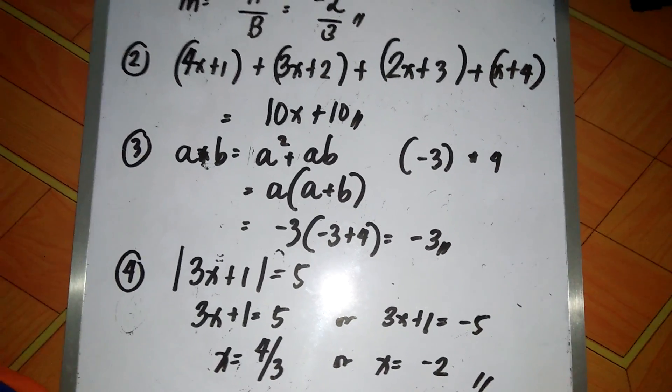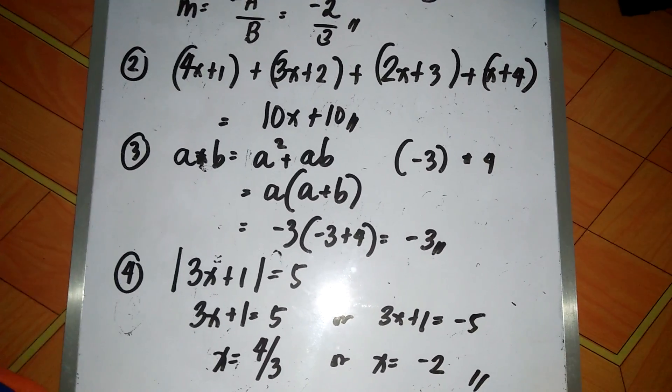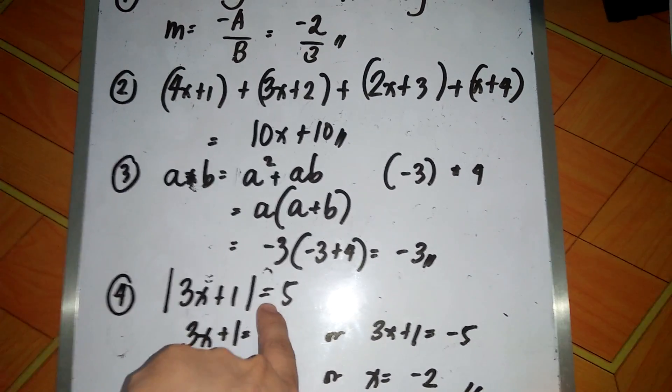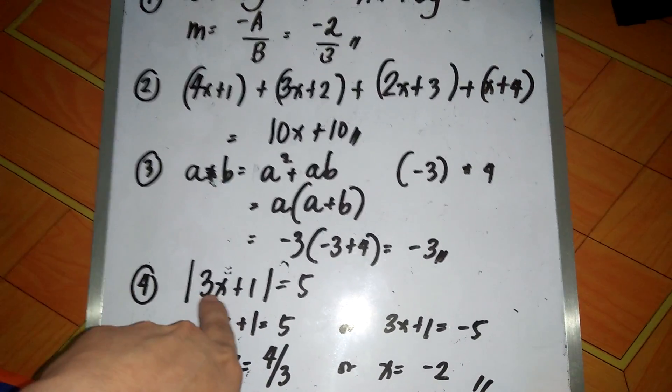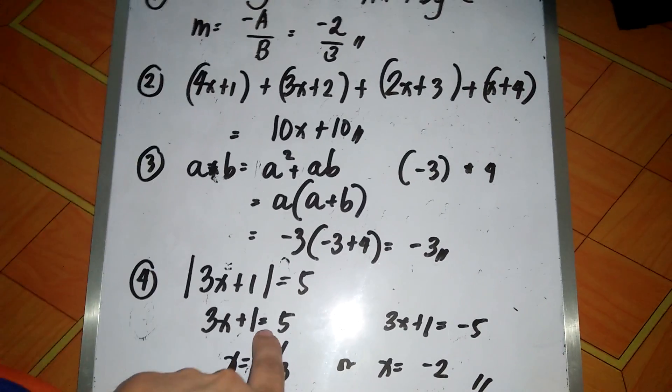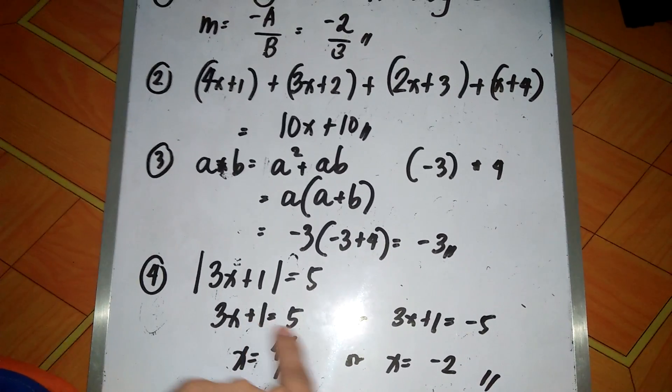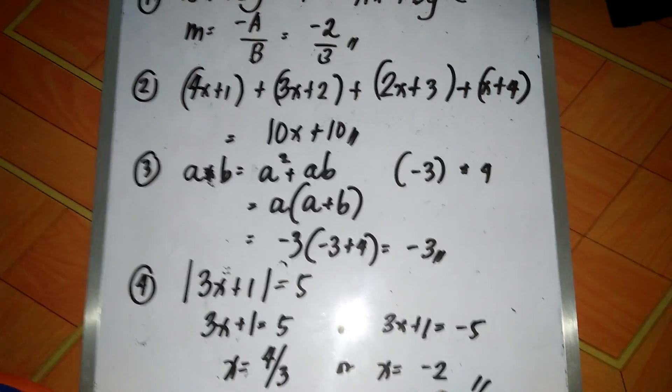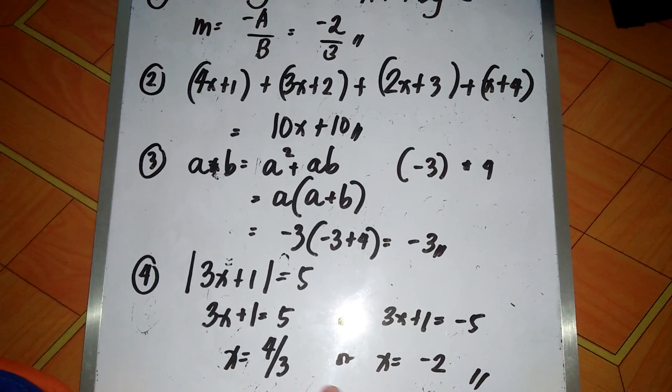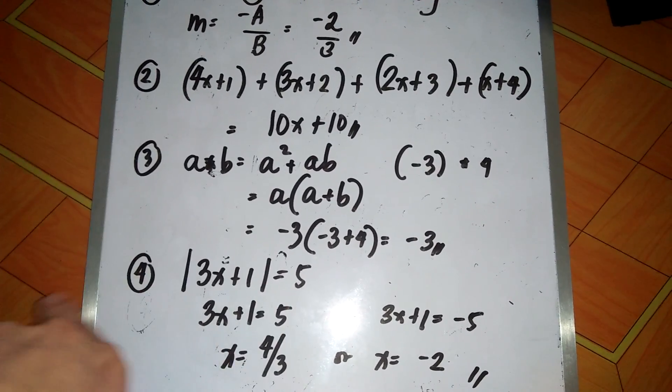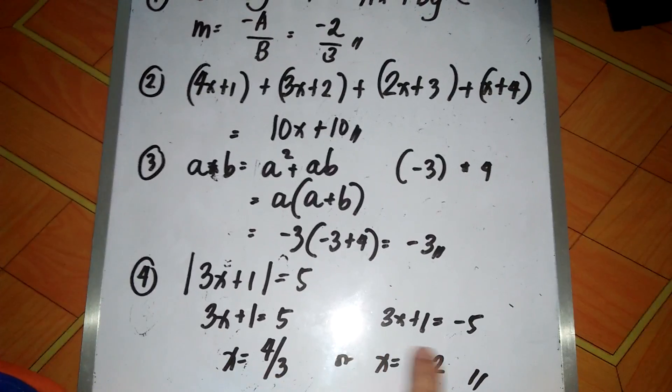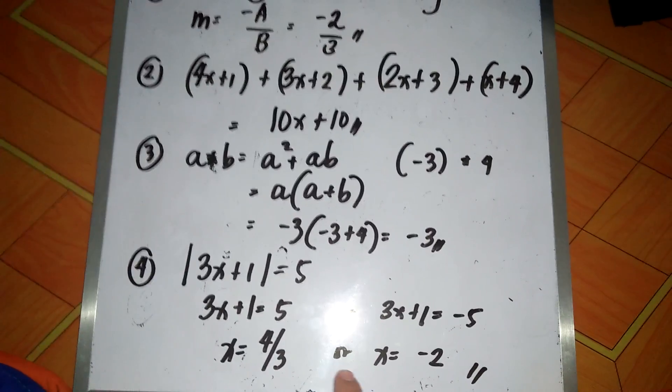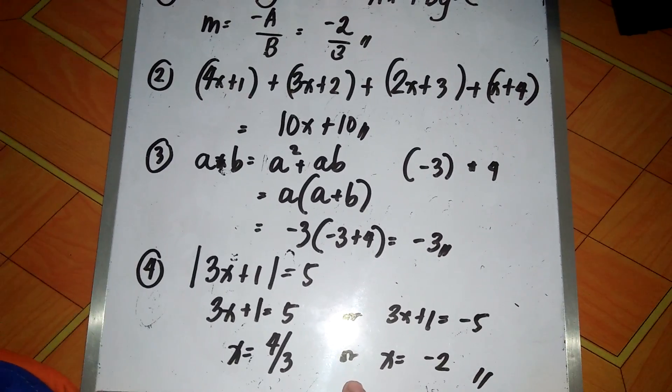For our last question, we have find the values of x such that the absolute value of 3x plus 1 is equal to 5. Take note that if we have an absolute value problem and that is just equated to a constant, then the equation inside the absolute value symbol is just equal to the positive or negative value of the constant. So we have 3x plus 1 is equal to 5 and 3x plus 1 is equal to negative 5. We have x is equal to 4 over 3 or x is equal to negative 2. For this type of problem, the team can work such that one member can solve for the positive value and another member can solve for the negative value, then they just need to consolidate their answers so that they can submit the complete answers to the proctors.